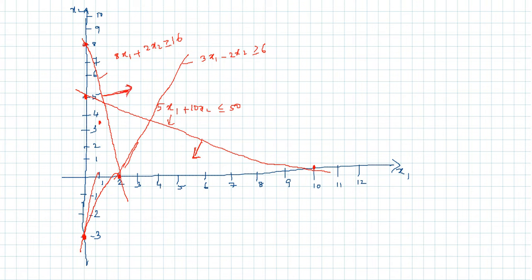For the third line, 3x1 − 2x2 ≥ 6, take point (4, 2): 12 − 8 = 4, which is not ≥ 6. So the feasible side is on the other side of that line. The feasible region is the intersection of all three constraint regions, which forms a bounded area on the graph.